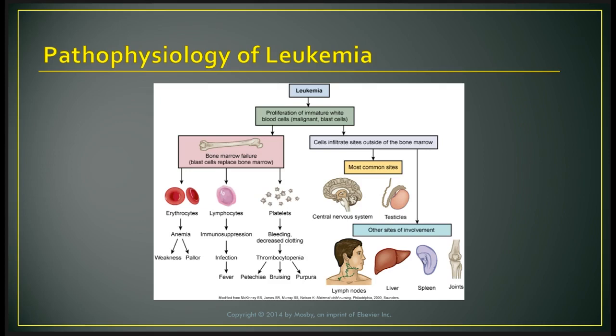The pathophysiology of leukemia involves a proliferation of immature white blood cells. You will see blast cells when looking at a slide. The bone marrow fails — they are no longer producing erythrocytes. The patient will present with anemia, will be weak and pale.